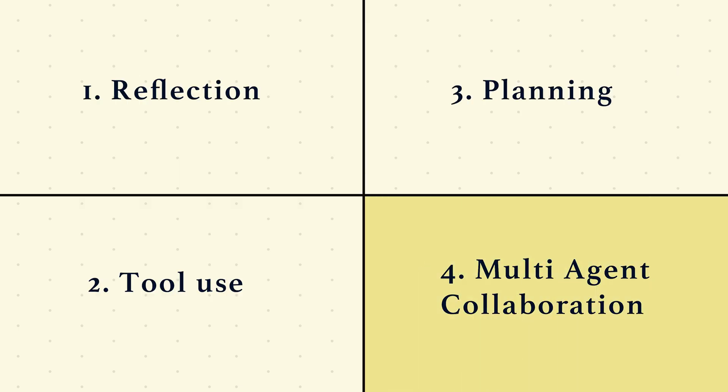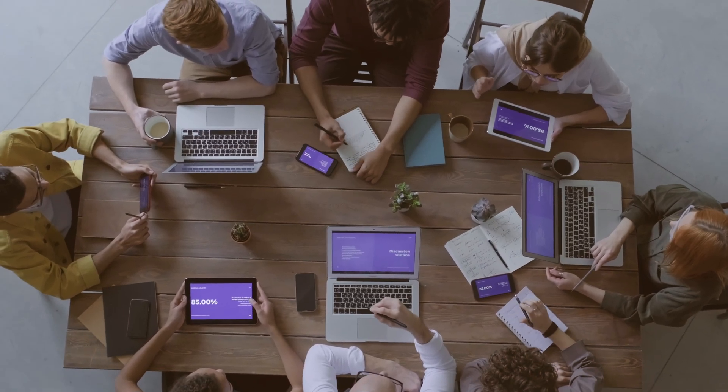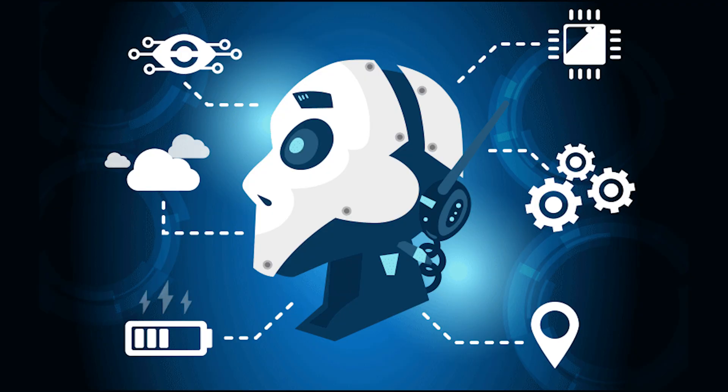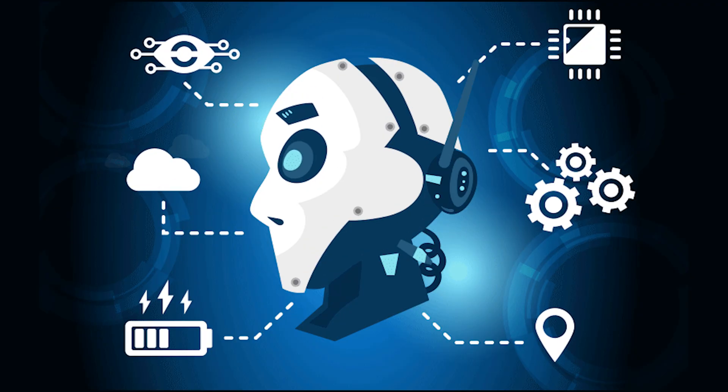The fourth pattern is multi-agent systems, where AI teams work together. Instead of one AI doing everything, multiple AI agents can specialize and collaborate. For example, AI-1 researches a topic, AI-2 writes an article, AI-3 edits and improves the content, and AI-4 optimizes it for SEO and uploads it. A central driving AI reviews the answers of each individual agent. Each AI does what it is best at, just like a human team. When you have multiple such AI agents working together, they can be structured in different architectural patterns.